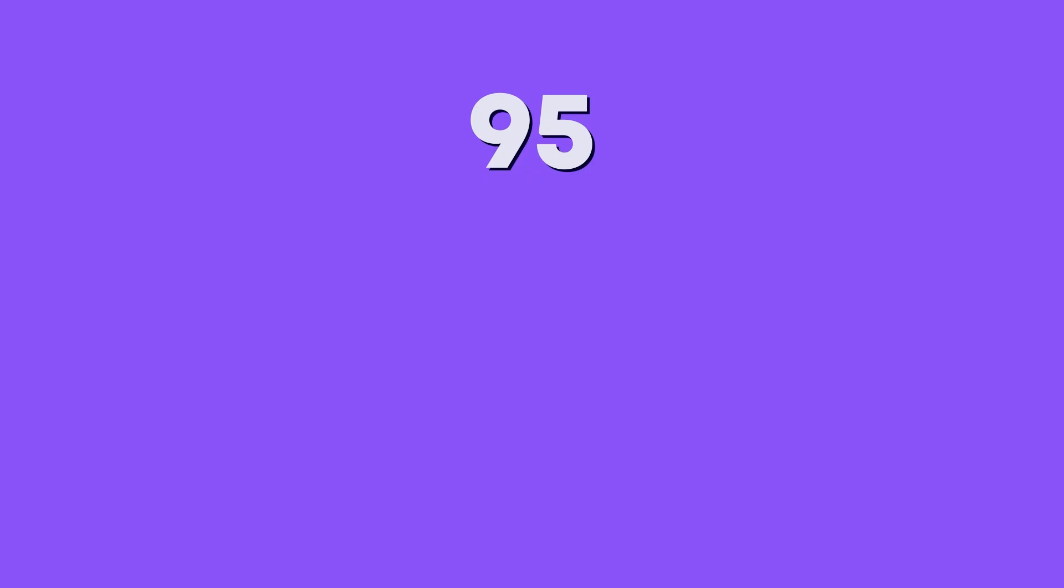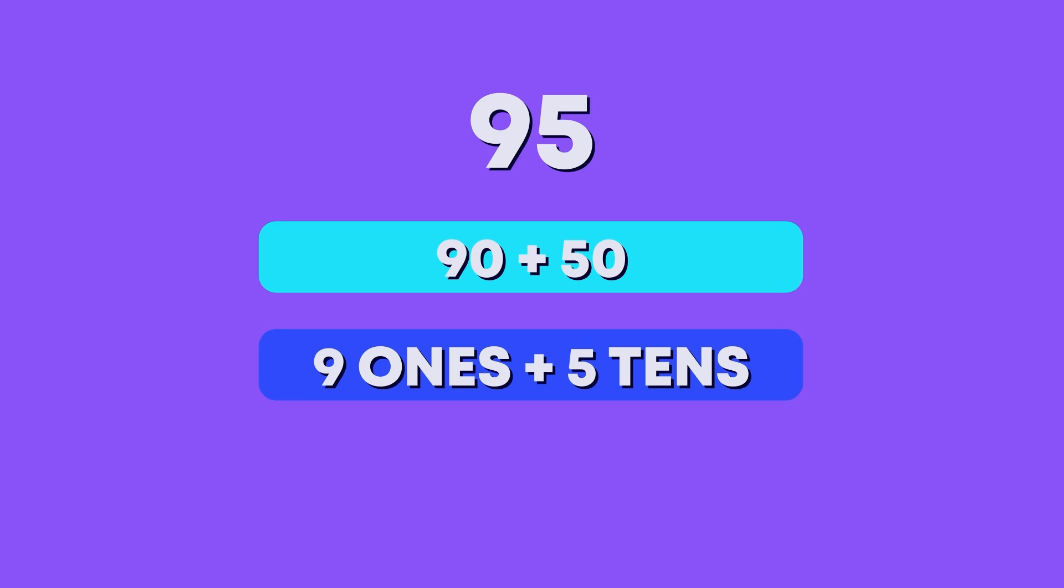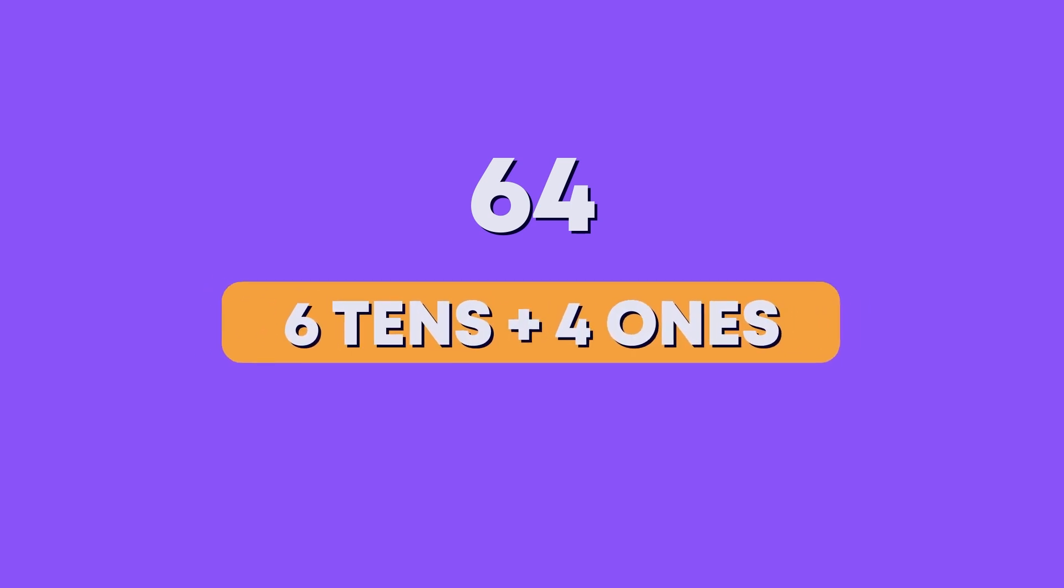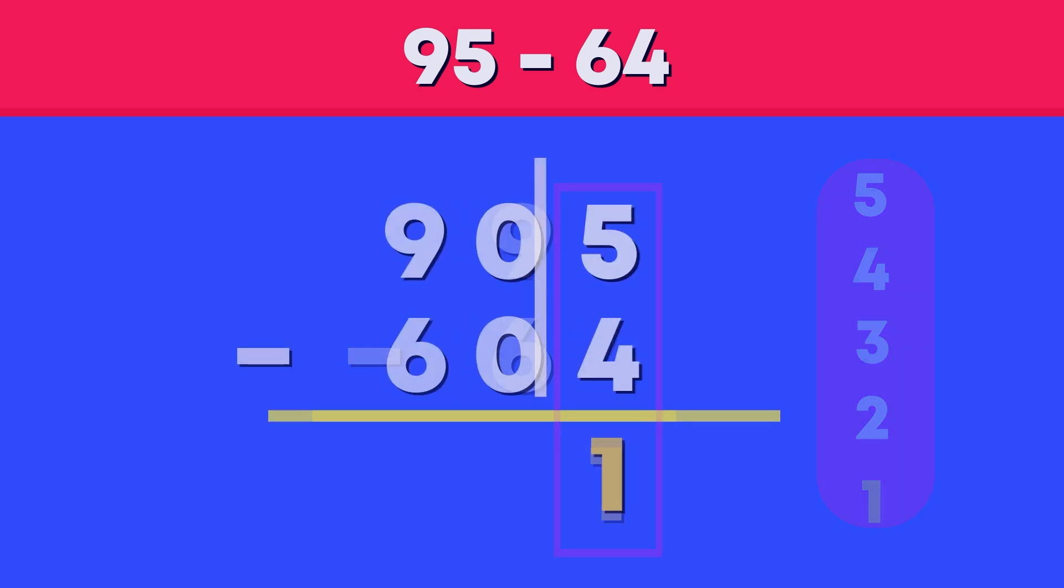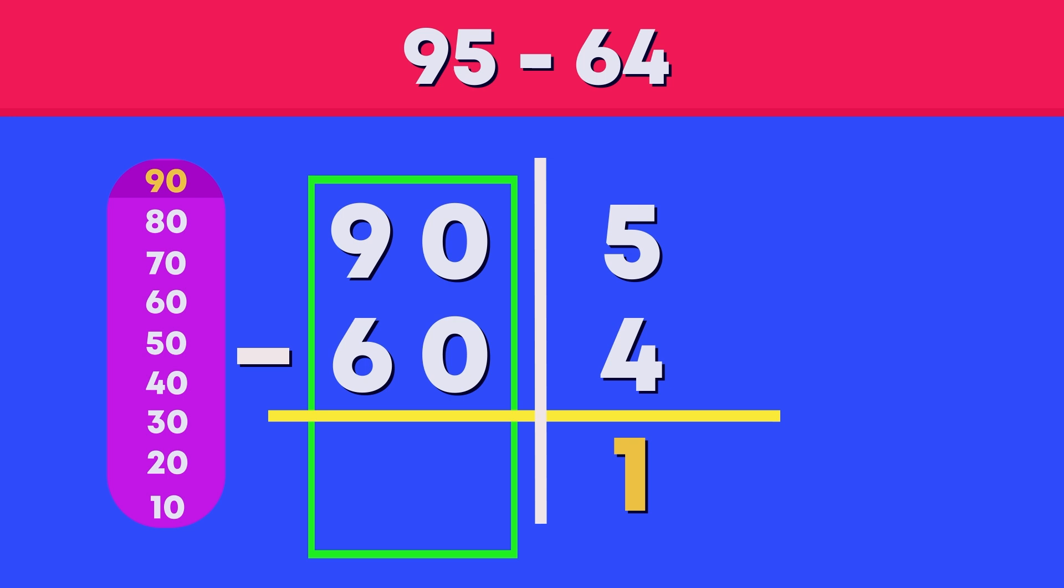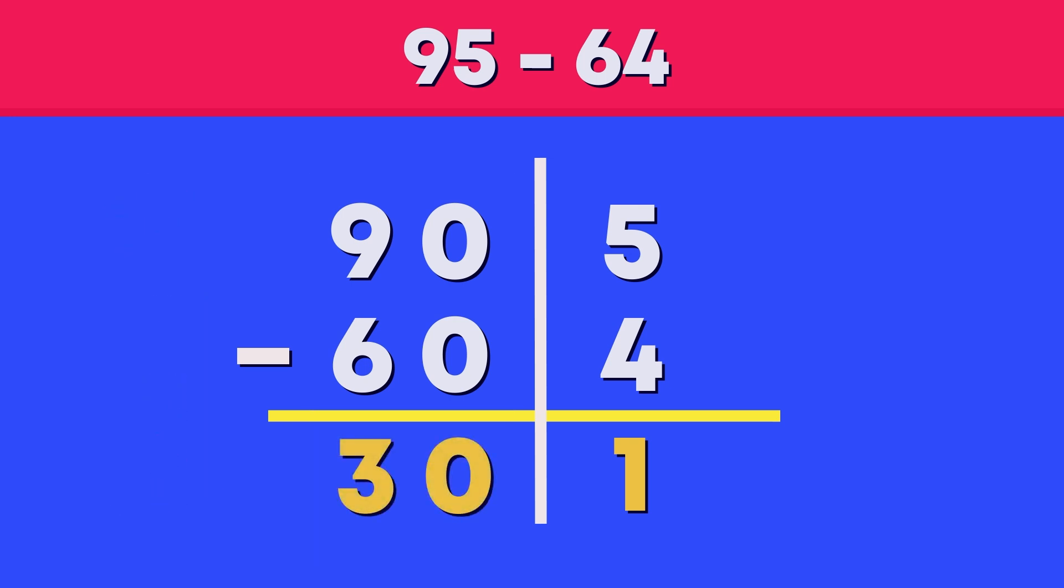95 equals 90 plus 5. Super splitting! Now 64 is 6 tens and 4 ones. First we subtract the ones. What is 5 minus 4? One! That's too easy. Try 90 minus 60. Hmm, 9 tens minus 6 tens is 3 tens. That's 30. How many have we got left all together?